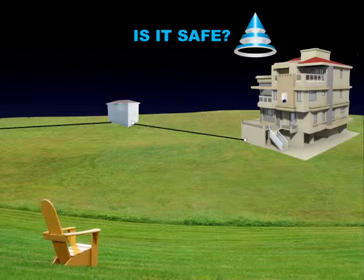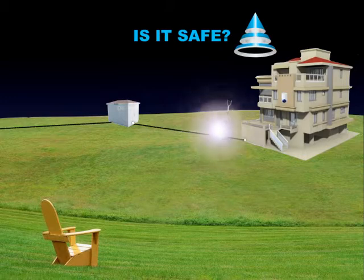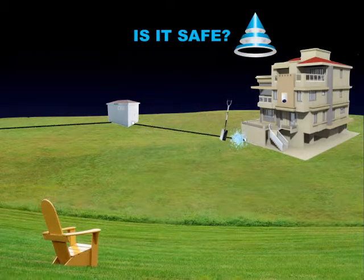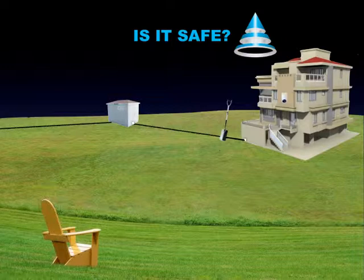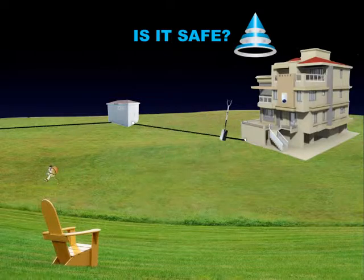So let's assume an intruder severs the cable exterior to your premises. What is the result? Quite simply, communication stops at the breakage point, meaning your security system is unable to communicate with the monitoring center. This leaves the intruder ample time to gain access to your premises undetected by your monitoring center, which is not a pleasant thought.